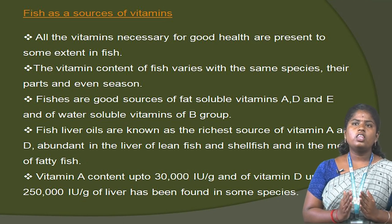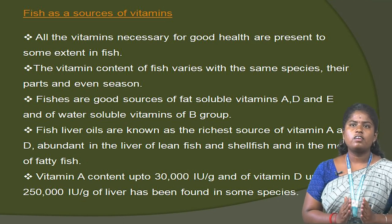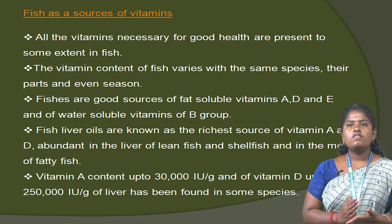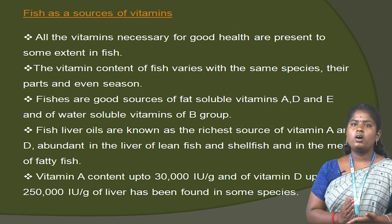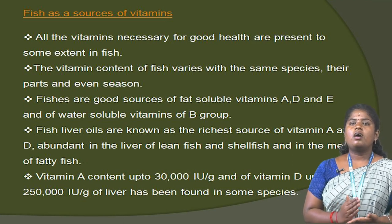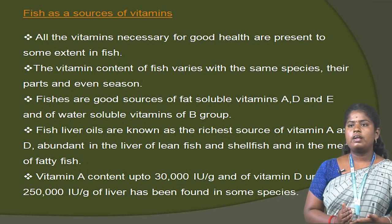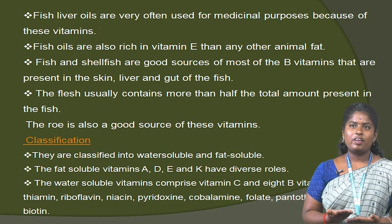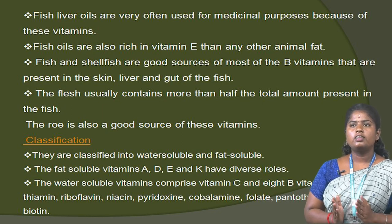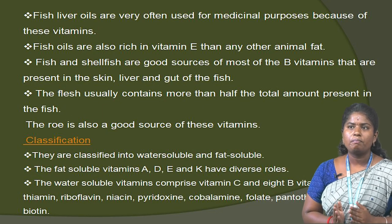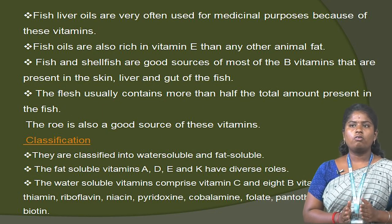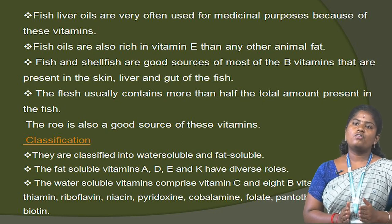Fish as a source of vitamins. All the vitamins necessary for good health are present to some extent in fish. The vitamin content of fish varies with species, parts and season. Fishes are a good source of fat-soluble vitamins A, D and E and of the water-soluble B-group vitamins. Fish liver oils are known as the richest source of vitamins A and D, abundant in the liver of lean fish and shellfish and in the meat of fatty fish. Fish liver oils are often used for medicinal purposes because of this vitamin content. Fish oils are also richer in vitamin E than any other animal fat. Fish and shellfish are a good source of most B vitamins, present in the skin, liver and gut of the fish.